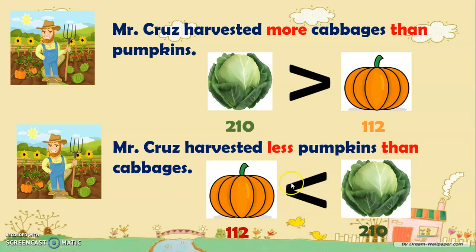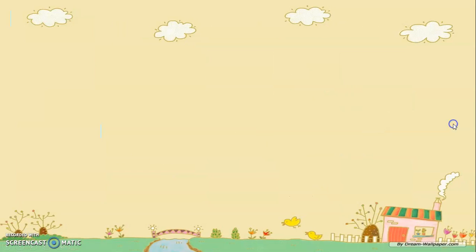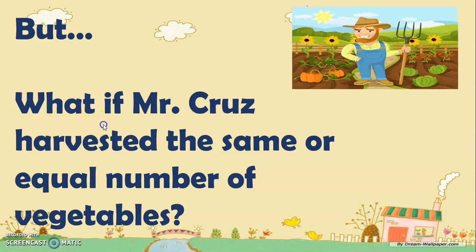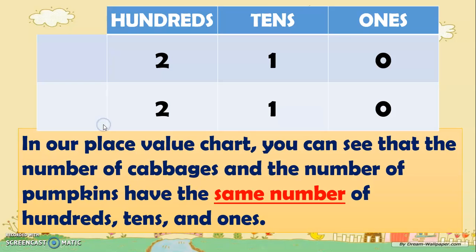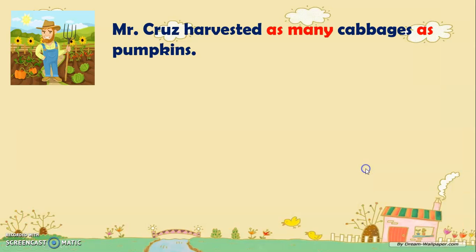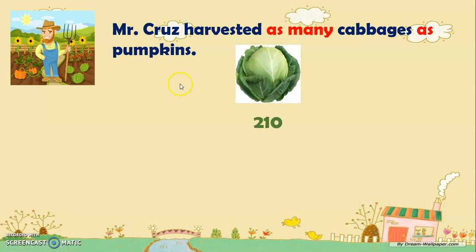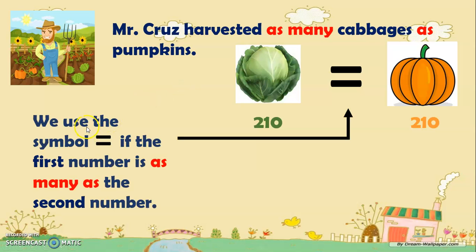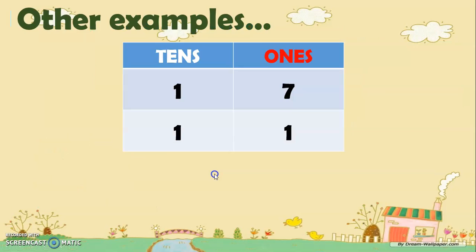But what if Mr. Cruz harvested the same or equal number of vegetables? Look at our place value chart — the number of cabbages and the number of pumpkins have the same number of hundreds, tens, and ones. So Mr. Cruz harvested as many cabbages as pumpkins: 210 cabbages and 210 pumpkins. They are just equal, so we use the equal symbol if the first number is as many as the second number.